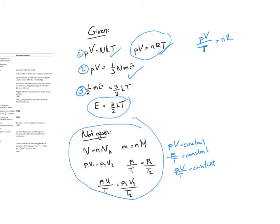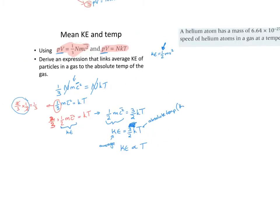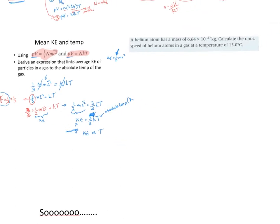The average kinetic energy of particles in a gas depends only on temperature. If I double the temperature, then the average kinetic energy of the atoms or molecules in the gas will double as well.